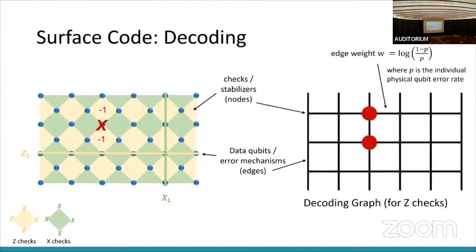So how do we fix these errors? That's where the decoding part comes in. We often construct this decoding graph, and here we've done it just for the Z checks, where all the nodes are Z stabilizers, and all the errors are these X error mechanisms on these data qubits. An edge connects two nodes that it would light up. Now let p be this individual physical qubit error rate. For this p, we're going to define the edge weight to be the log likelihood ratio of p.